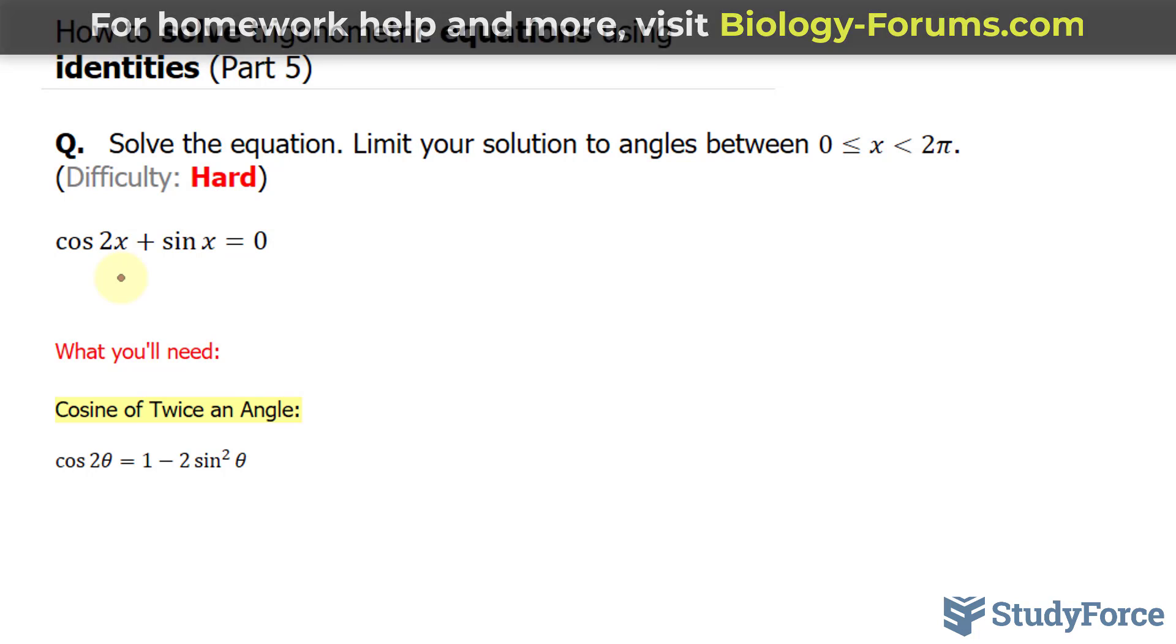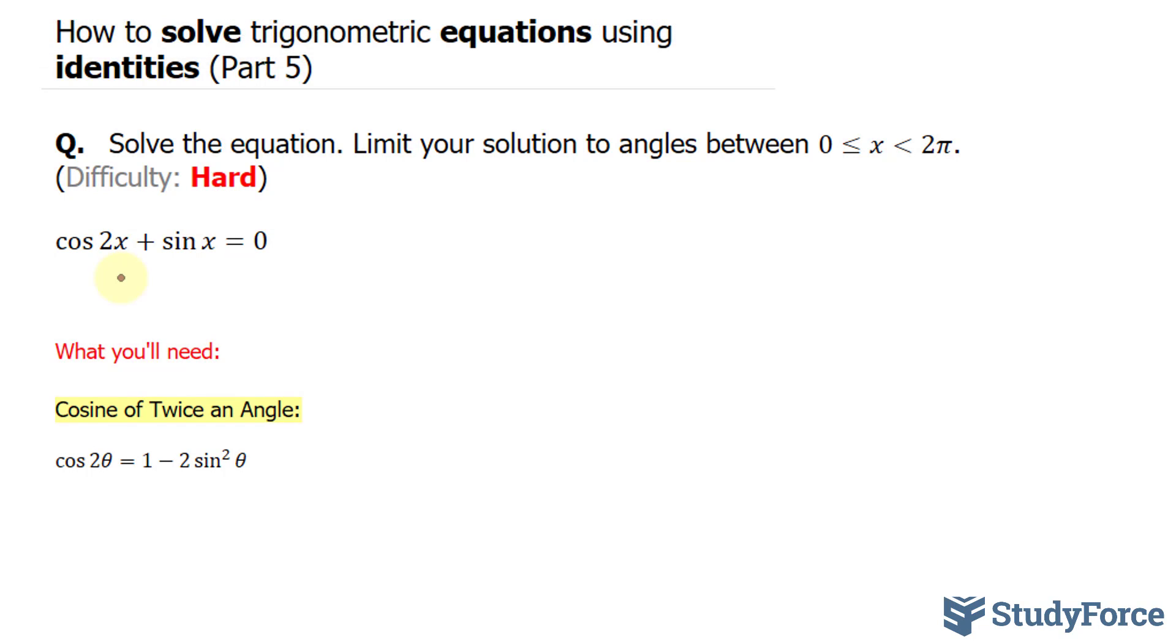As the title implies, we have to use identities to figure this out. So what I will do is convert cosine two x using the identity shown underneath, which is cosine of twice an angle. In other words, one of the double angle formulas. So I'll replace cosine two x with one minus two times sine squared x.